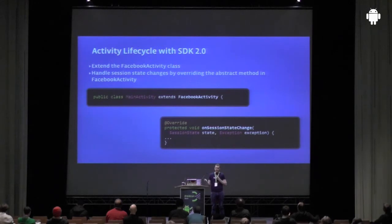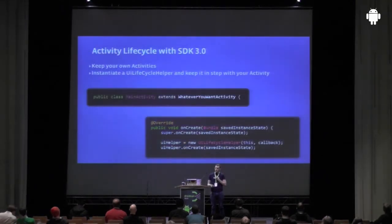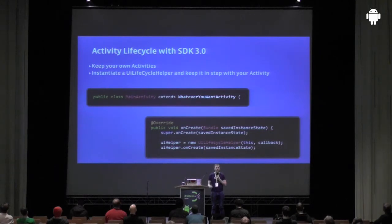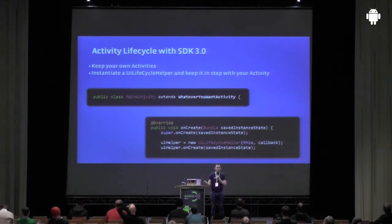The sucky thing about the Facebook Activity class was that you had to build your main activities around it if you wanted it to manage your session. Now we've got rid of that — you can build your activity to extend whatever you want, or just extend the basic Android activity class. We have a UI lifecycle helper which runs in sync with your activity. Every time you do an 'on something' event, you just have a matching event inside UI lifecycle helper. So, for example, on onCreate you'll do your super onCreate, instantiate the UI lifecycle helper, call its onCreate method, and that keeps the lifecycle of your Facebook integration in sync with the rest of your app.